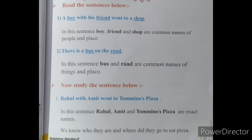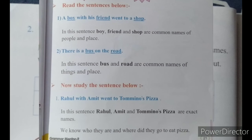For more explanation, let's read the sentences. The first sentence is: Rahul with Amid went to Tomino's pizza. In this sentence, Rahul, Amid, and Tomino's pizza are exact names. We know who they are and where they went to eat pizza. So Rahul, Amid, and Tomino's pizza are proper nouns.